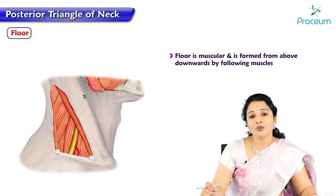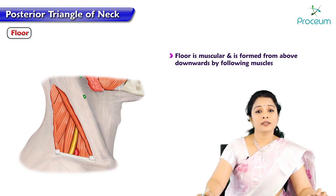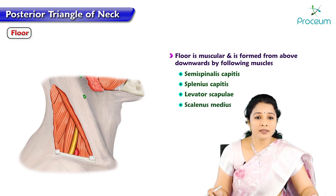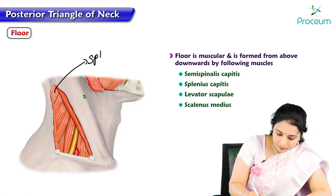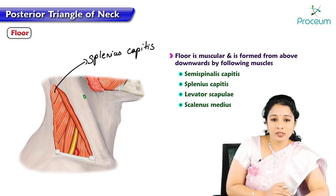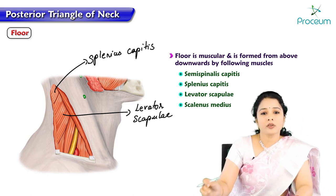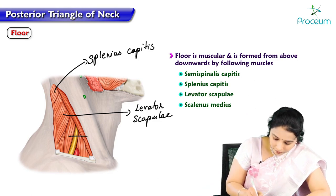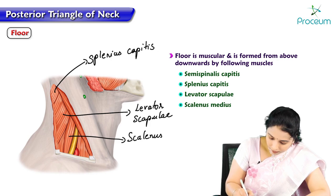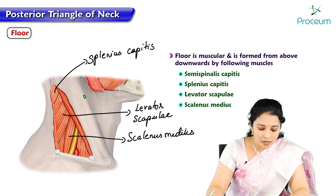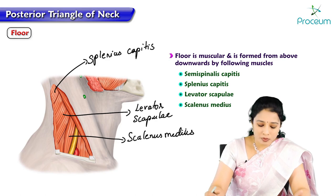The floor of the posterior triangle is muscular and is formed from above downwards by: semispinalis capitis, splenius capitis, levator scapulae, and scalenus medius. Splenius capitis is the first visible muscle; the levator scapulae runs obliquely towards the scapula; and the fourth muscle is scalenus medius. Semispinalis capitis is usually not well appreciated in the posterior triangle.